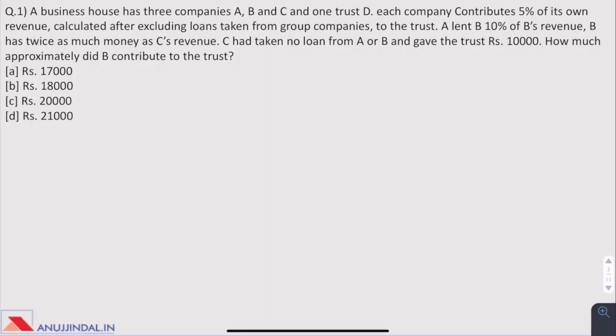Question 1. A business house has three companies A, B and C and one trust D. Each company contributes 5% of its own revenue calculated after excluding loans taken from the group company to the trust. A lent B 10% of B's revenue, twice as much money as C's revenue and C had taken no loan from A or B and gave the trust 10,000 rupees. How much approximately did B contribute to the trust?